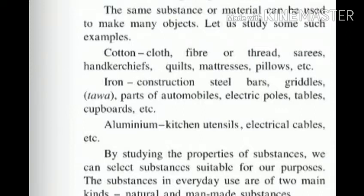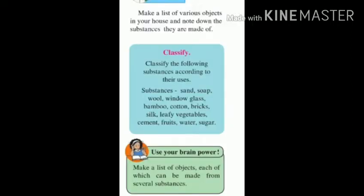Substances can be classified into two types: natural and man-made. We classify the following substances according to their use: sand, soap, wool, glass, bamboo, silk, leaf, cement, and fruits.